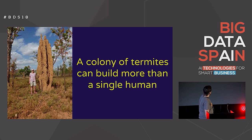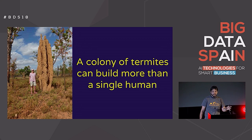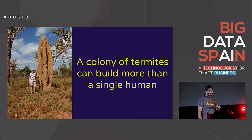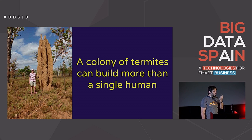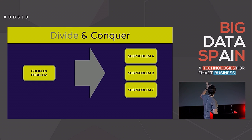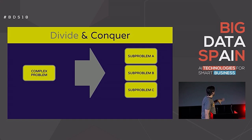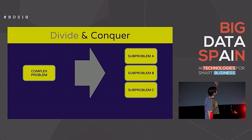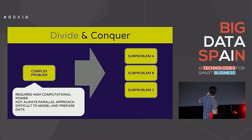A colony of termites can build more than a single human. Think about this. A person is far more intelligent than any termite or any insect, but what the insect can build is amazing. Why? Because they collaborate. They work together to build something that one of the most intelligent beings on the planet cannot build alone. How do they do that? By divide and conquer.